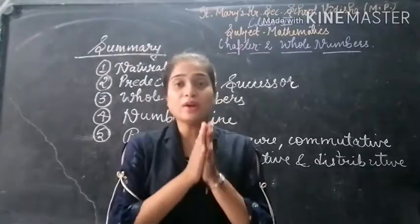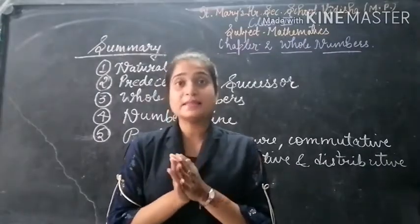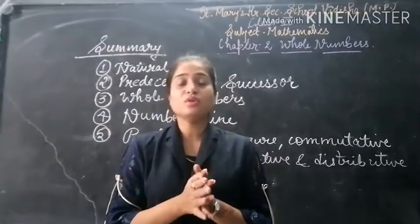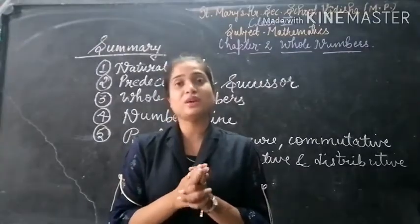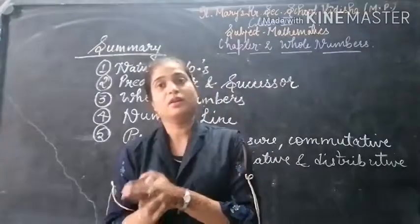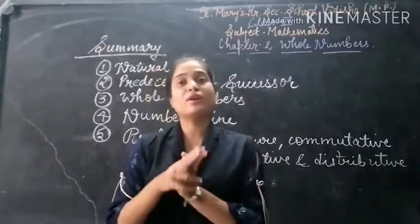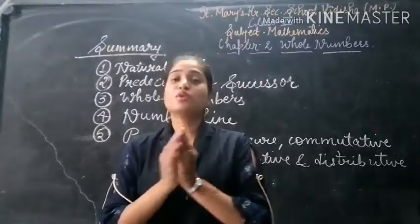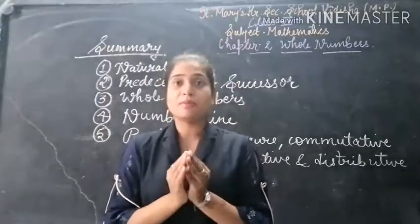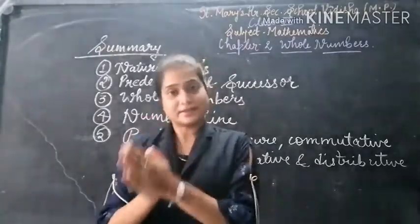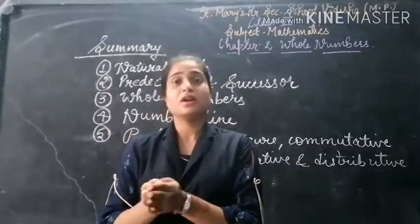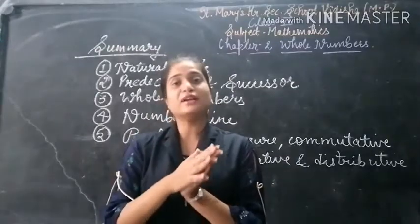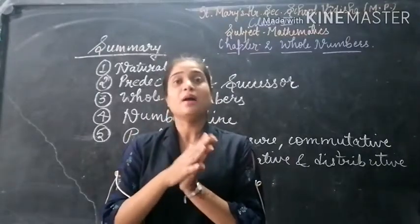Every whole number has a successor. The successor of 0 is 1, the successor of 1 is 2, the successor of 2 is 3, and so on. But except 0, every whole number has a predecessor.